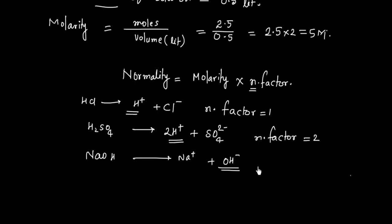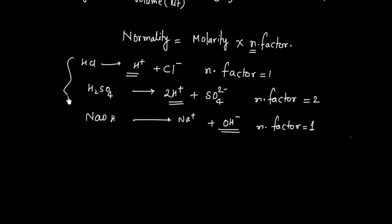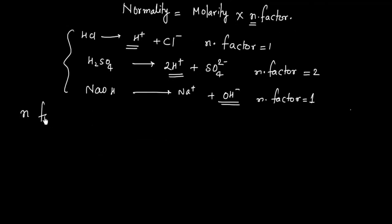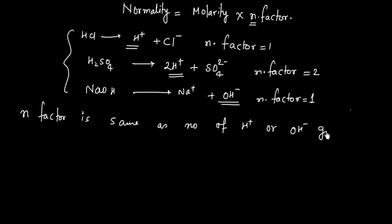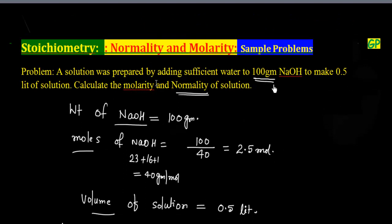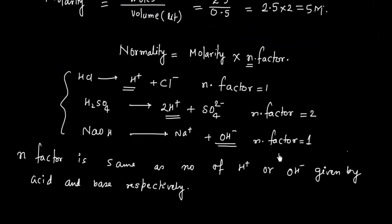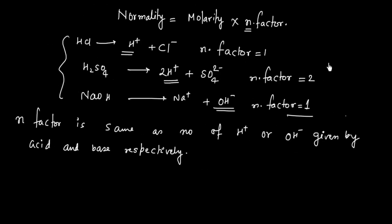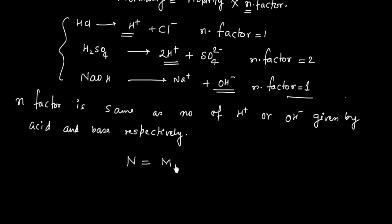For NaOH, the dissociation gives Na⁺ and 1 OH⁻, so the n-factor is 1. The n-factor is the number of H⁺ or OH⁻ given by the acid or base respectively. Since NaOH has an n-factor of 1 and molarity is 5M, we can now calculate normality.